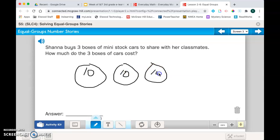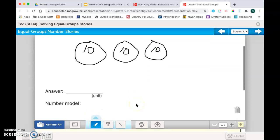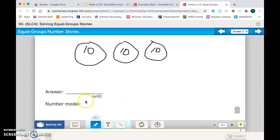So we can look at that and we can say our number model is ten plus ten plus ten, or ten times three. If you add those in there, let's see. Our answer is thirty. Thirty cars.